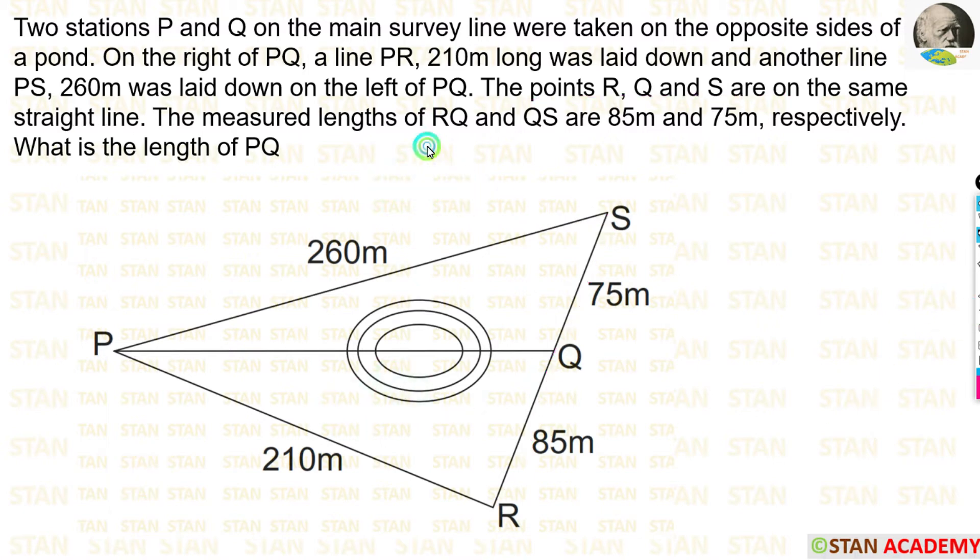The measured lengths of RQ and QS are 85 meter and 75 meter respectively. RQ is 85 meter and QS is 75 meter. What is the length of PQ? So we have to find out the length of PQ.